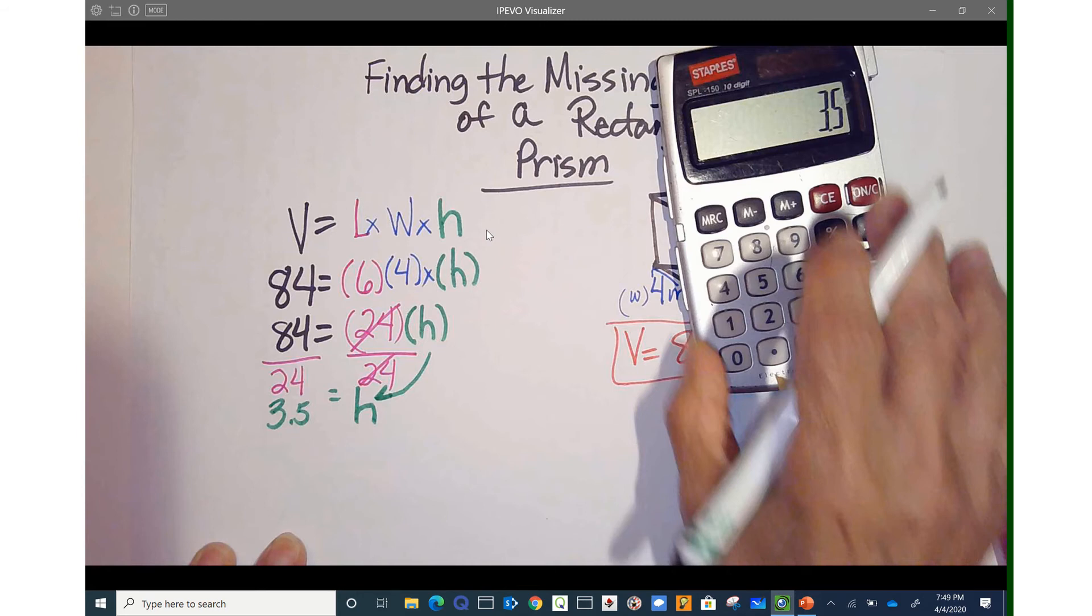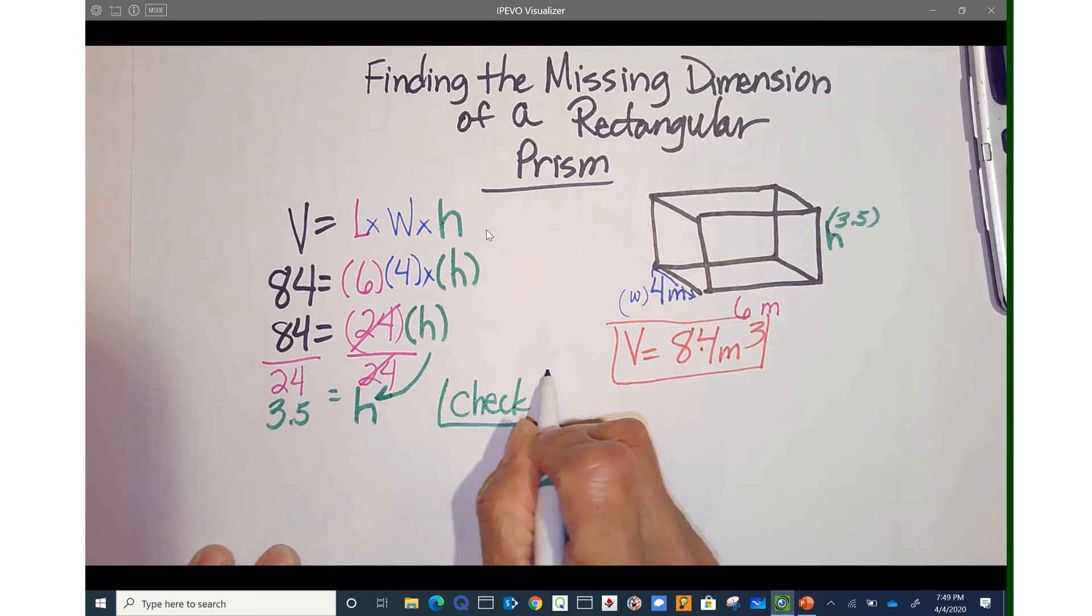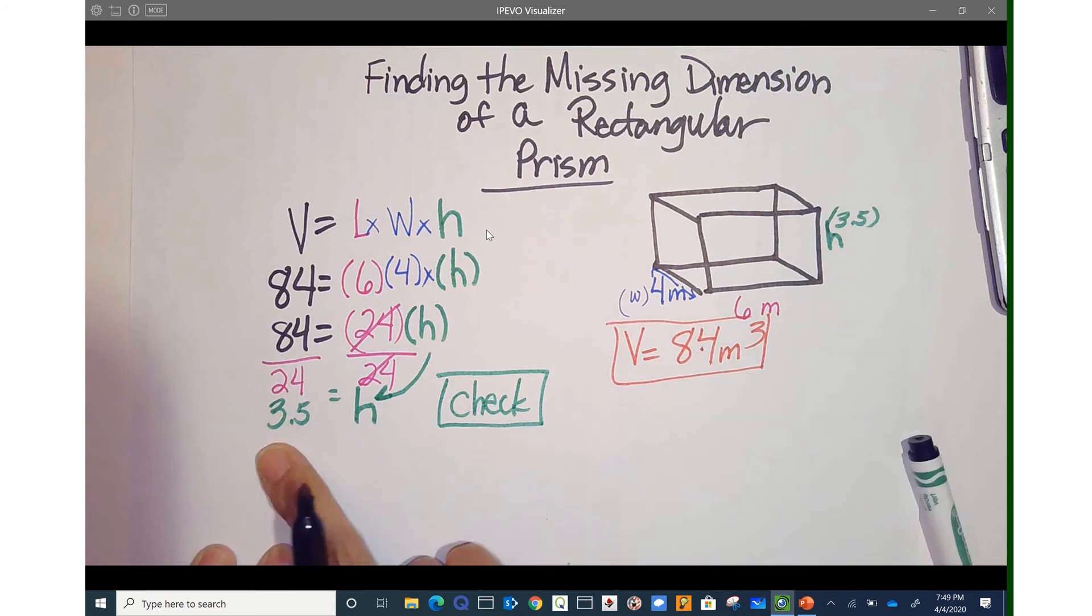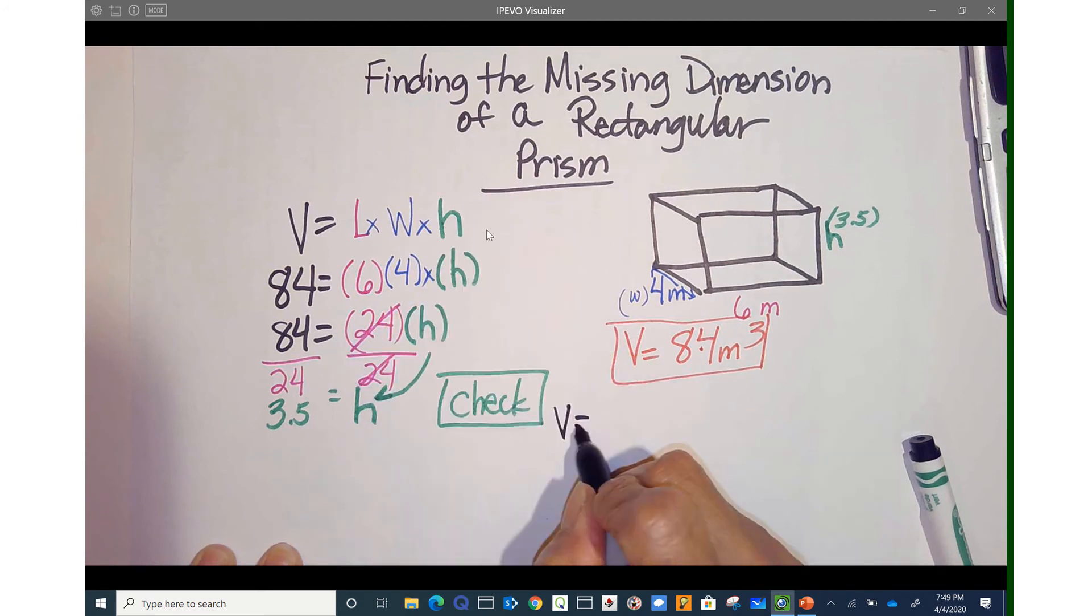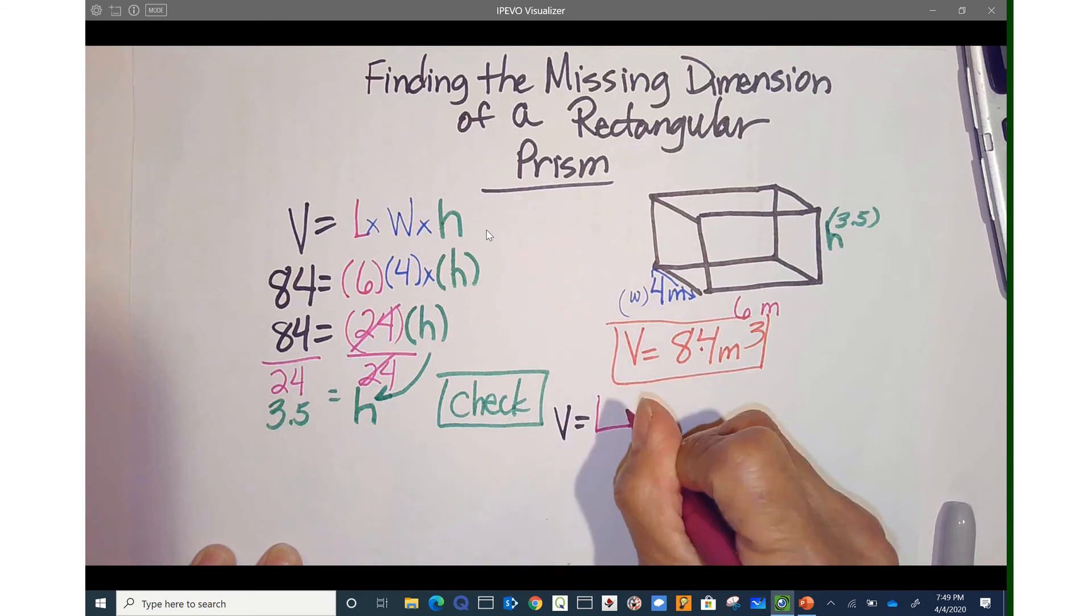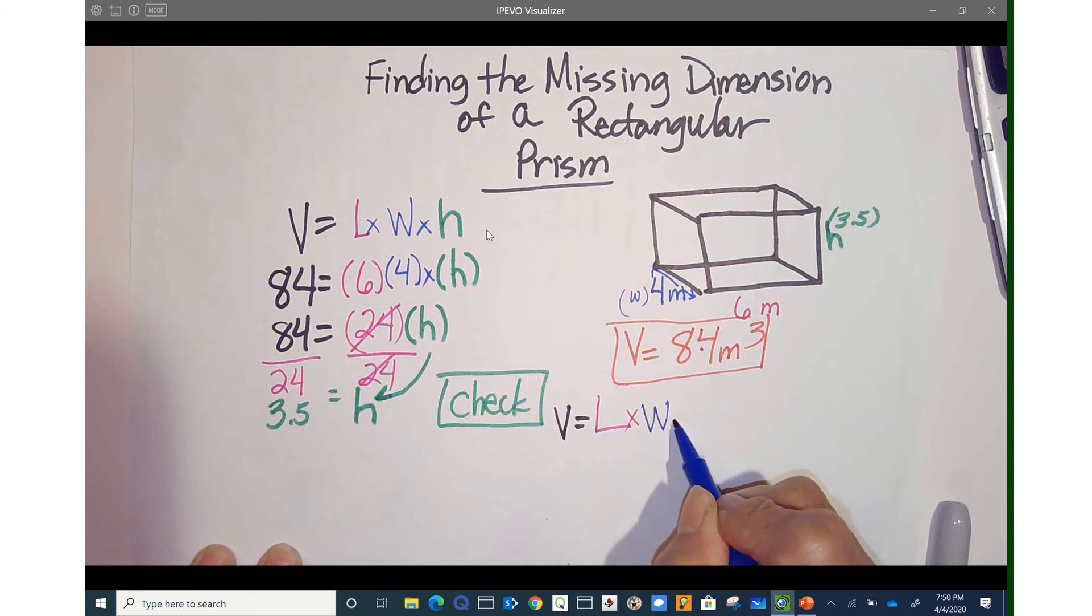Now we're going to check our work. And I'm going to do it down here. Check. And remember, to check it, all you do is rewrite this problem and plug in what height is. So we have volume equals length times width times height.